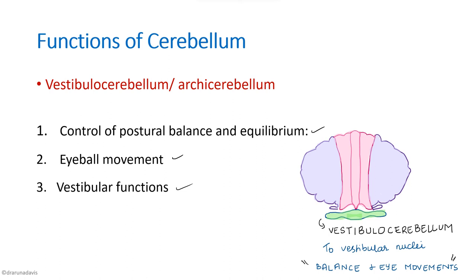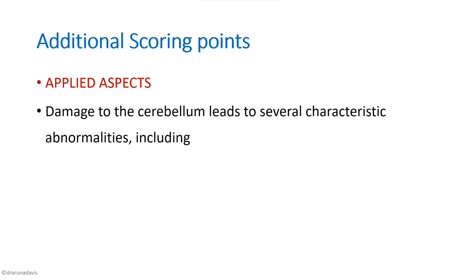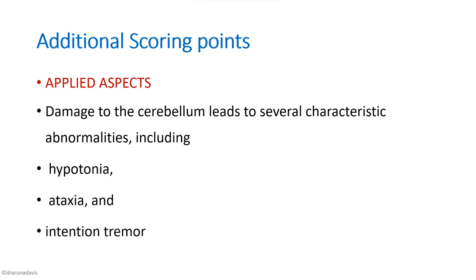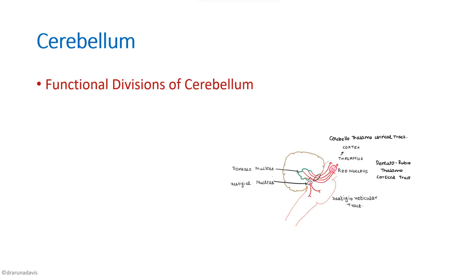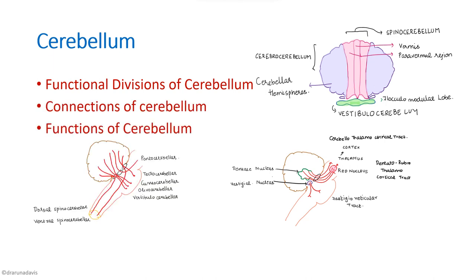When questions on the cerebellum are asked, you can also include applied aspects as additional scoring points. Damage to the cerebellum results in hypotonia, ataxia, and intention tremor. To summarize, we have covered the functional divisions of the cerebellum, the afferent and efferent connections, the deep cerebellar nuclei, and the functions of each cerebellar division.